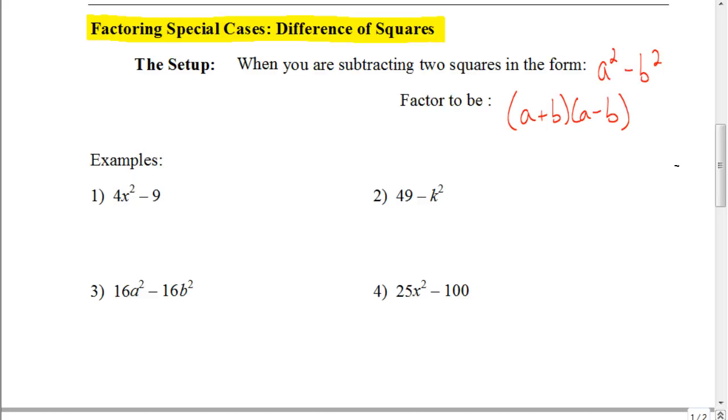So for example, let's look at what we have here. 4x² - 9. There is no greatest common factor here, so I don't have to worry about that. So I see that I am subtracting, so it is a difference, but is it a difference of two squares? So what I look for is, can I take the square root of 4x²? Yeah, the square root of 4x² would just be 2x.